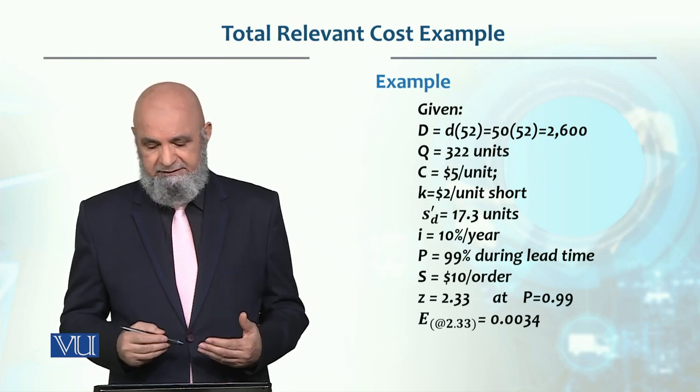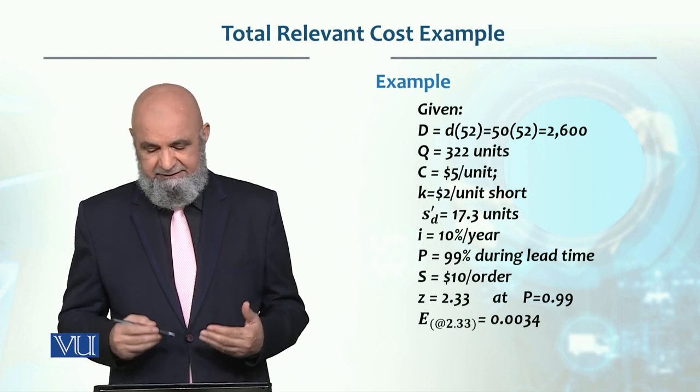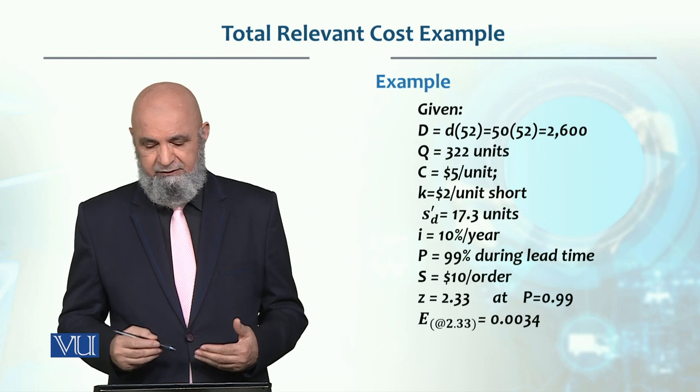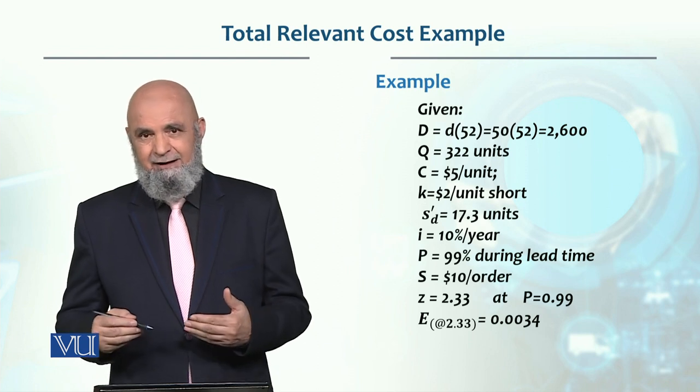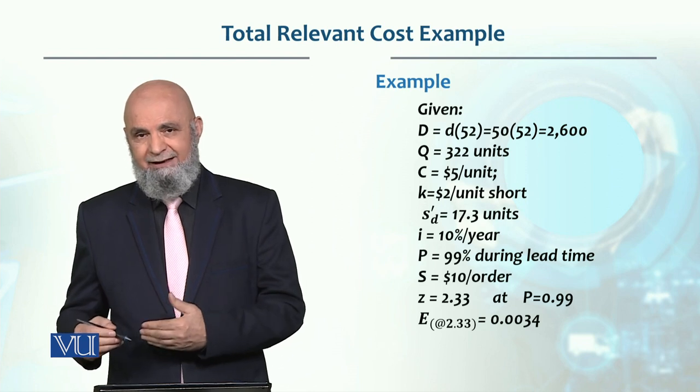Ordering cost in this case is $10. The value of Z is 2.33 at P equals 0.99.